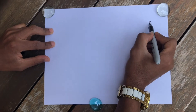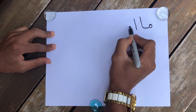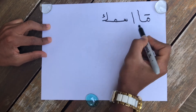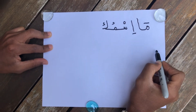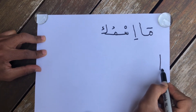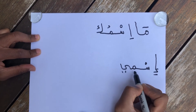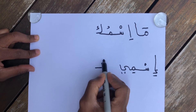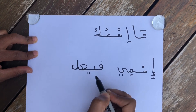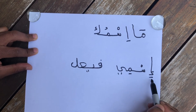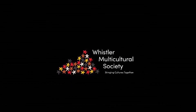If you meet someone from an Arabic country, you have some words to have fun with. 'Ma ismok' means 'What's your name?' And the answer is 'Ismi' — it means 'My name is.' For example, 'Ismi Faisal' means 'My name is Faisal.' Ma ismok — what's your name? My name is Faisal. Thank you.